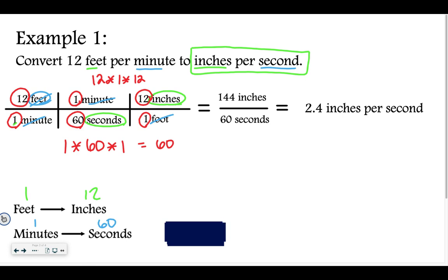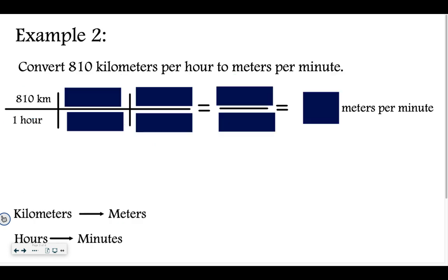So if something is moving at 12 feet per minute, that is the same as saying it moves 2.4 inches per second. And if you're confused, that's okay — we're going to do a couple more examples.